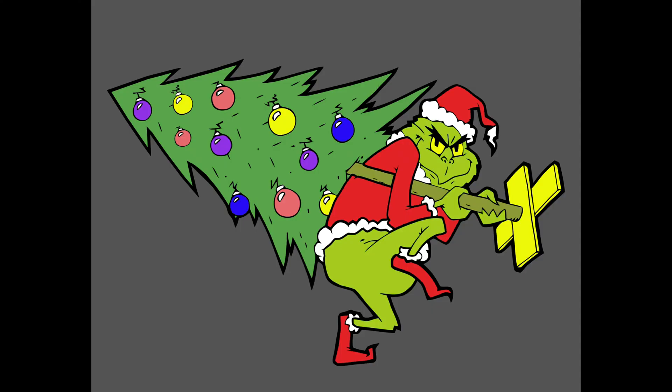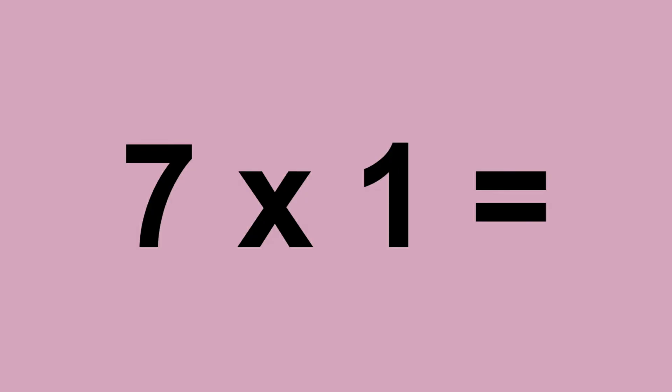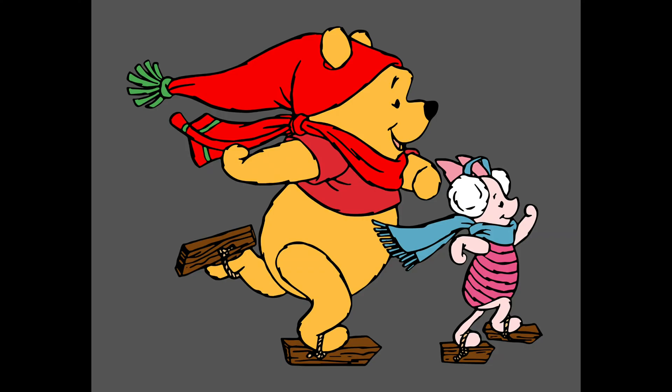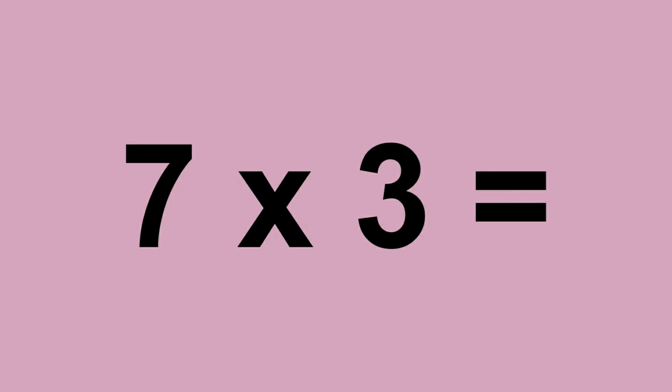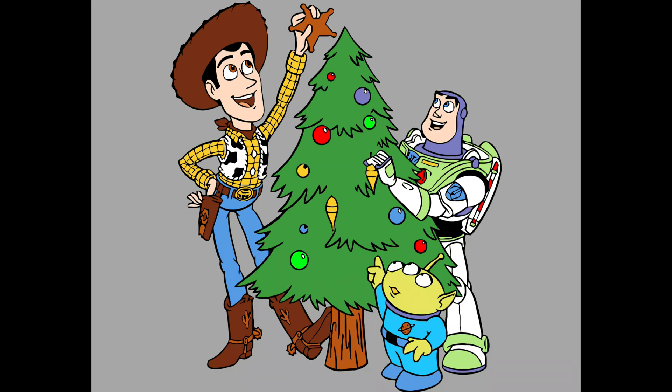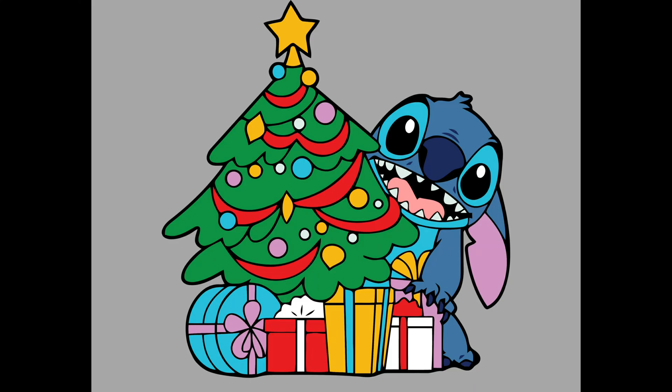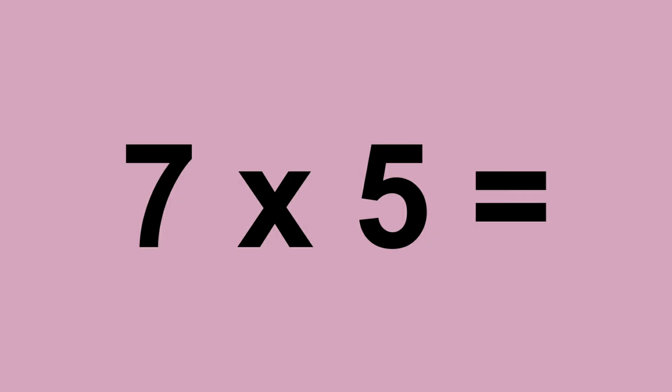Seven times zero equals zero. Seven times one equals seven. Seven times two equals fourteen. Seven times three equals twenty-one. Seven times four equals twenty-eight. Seven times five equals thirty-five. Seven times six equals forty-two.